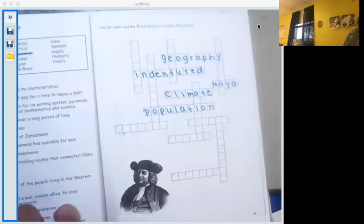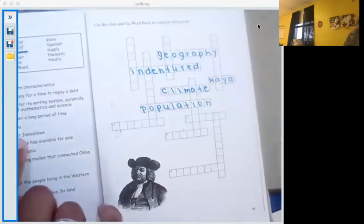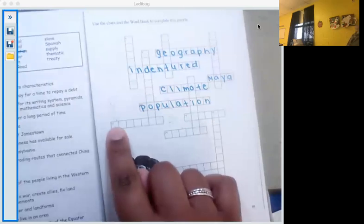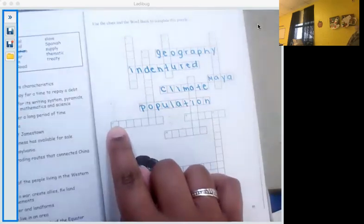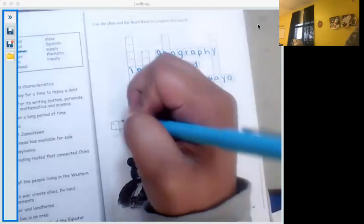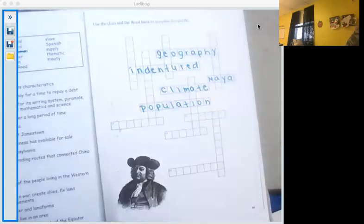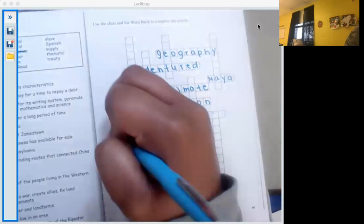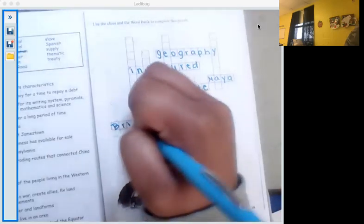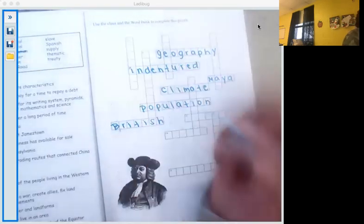Number 11. People who established the colony at Jamestown. I believe that is going to be English. Wait. Is English on there? Let's see. English is not on there. It's going to be British. Okay. The British.